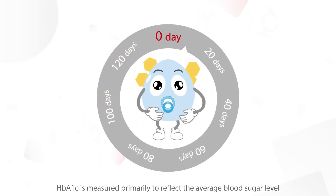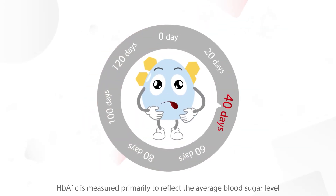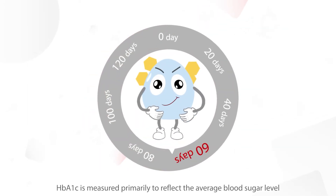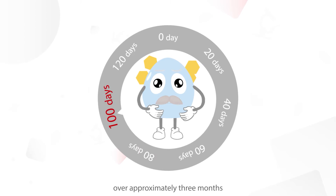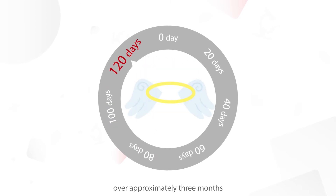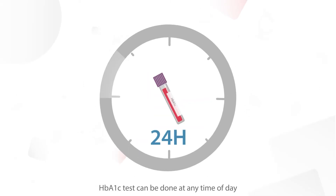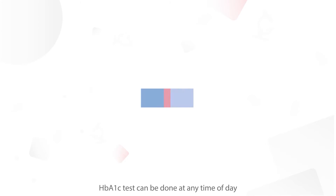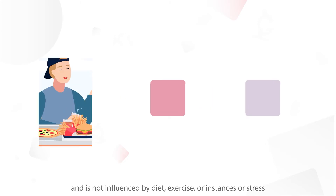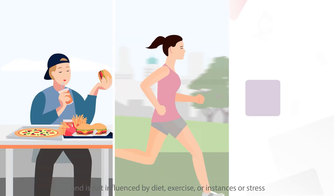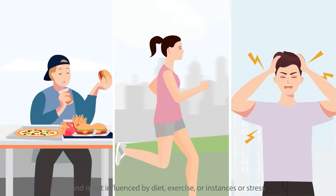HbA1c is measured primarily to reflect the average blood sugar level over approximately 3 months. HbA1c tests can be done at any time of day and are not influenced by diet, exercise, or instances of stress.